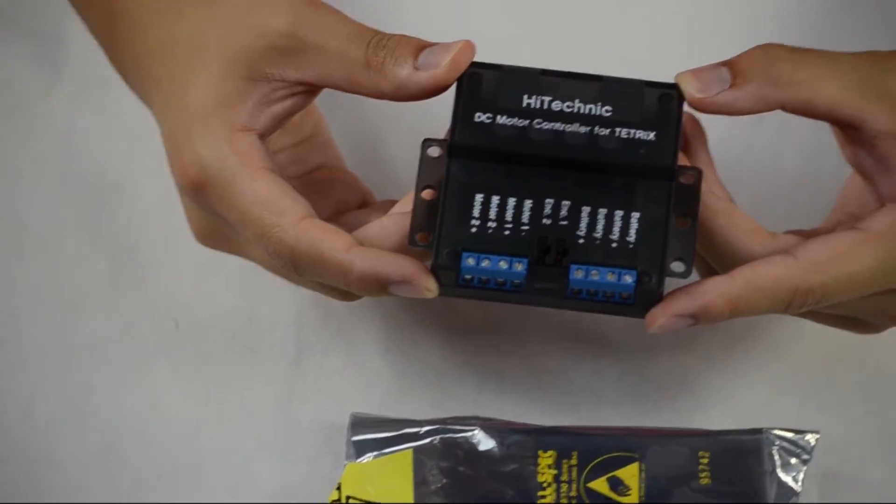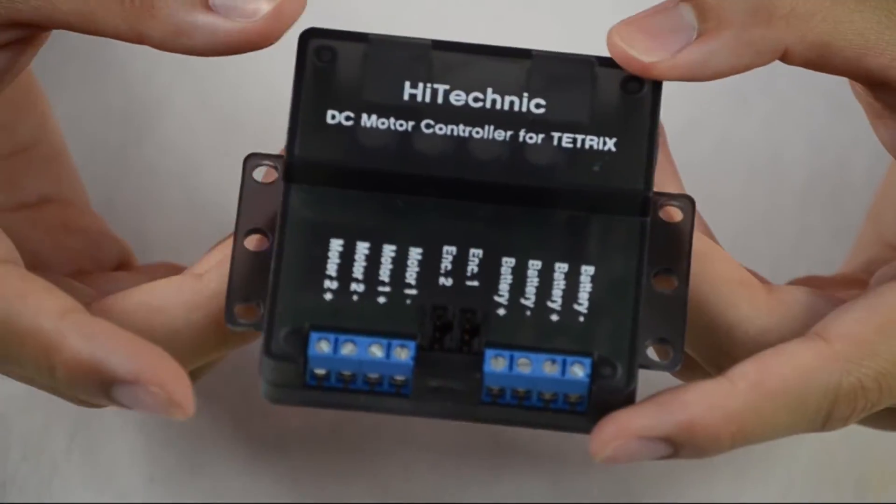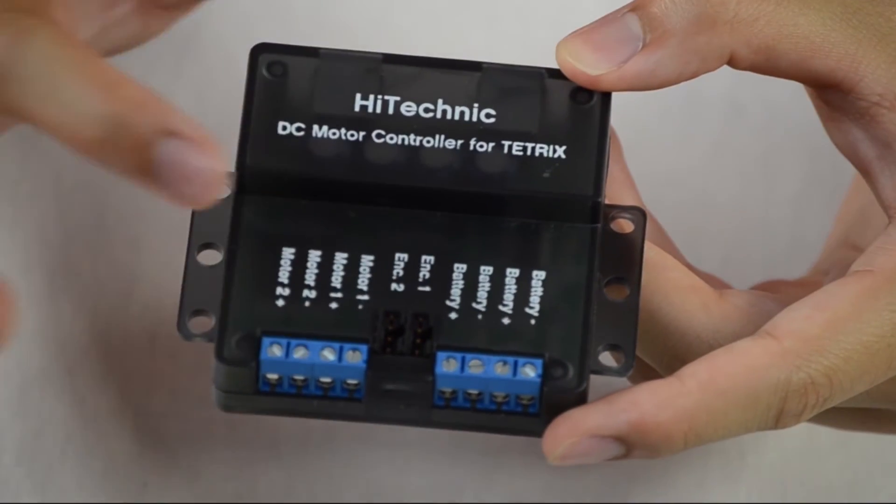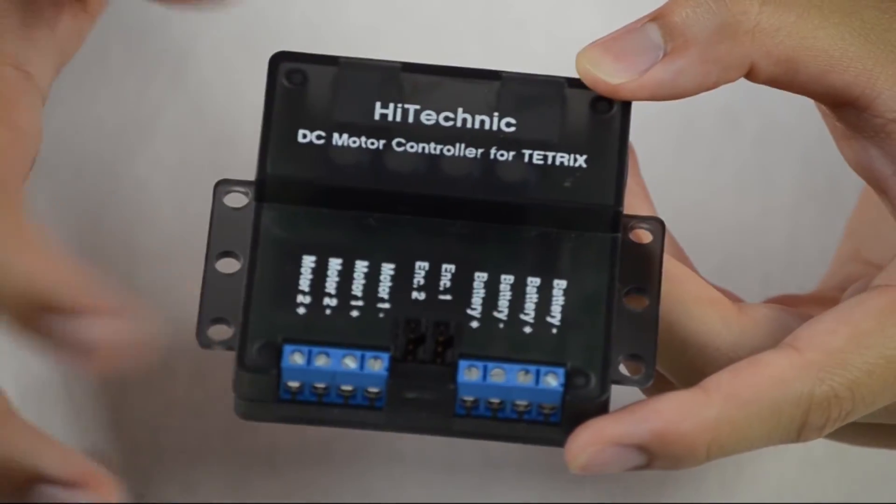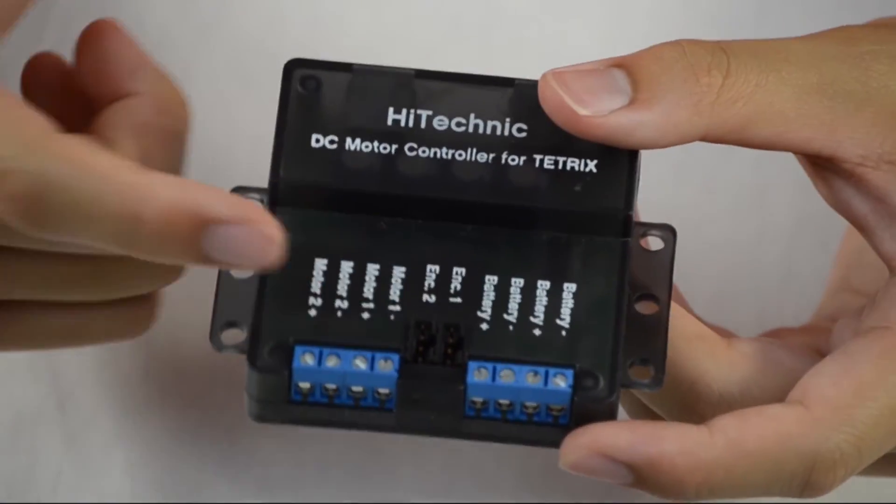And so this is the actual DC motor controller. There are two types of controllers: there is the DC motor controller and the servo controller. The only difference is that instead of these encoder motor and second motor ports, they have servo ports. On there, there is the battery ports, the encoder ports, the motor ports, and the NXT wire ports.